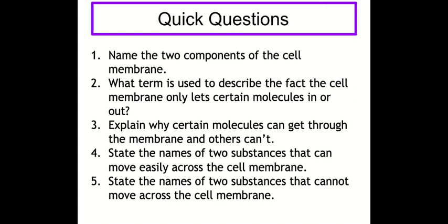Now we have some quick questions to check your knowledge so far. You should not be going back to look at your notes — attempt these from memory to make sure you're following everything. Pause the video, write down your answers, and then we'll run through them together. Question one: name the two components of the cell membrane — proteins and phospholipids. Question two: what term describes the fact that the cell membrane only lets certain molecules in or out? — selectively permeable.